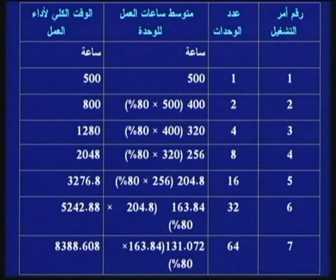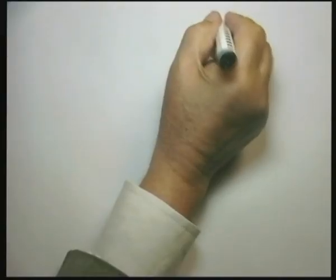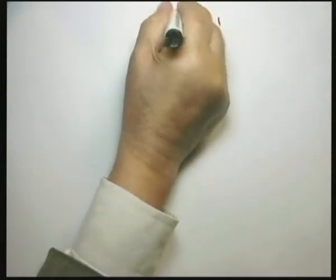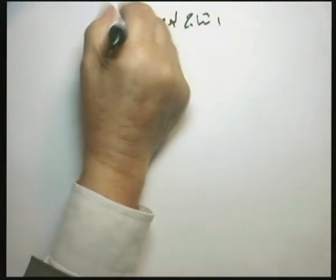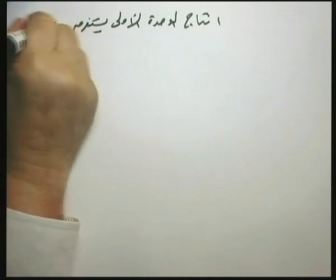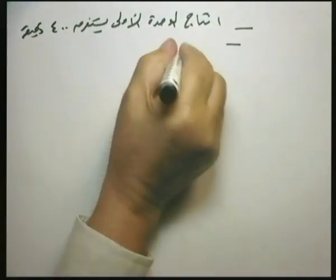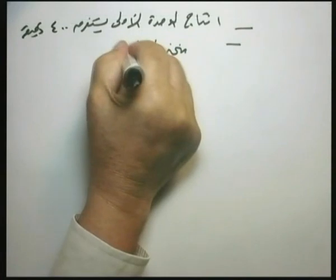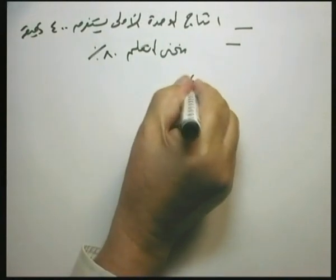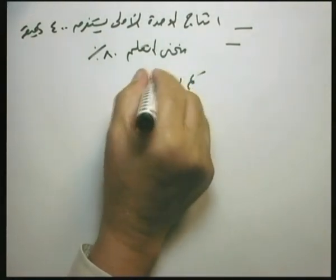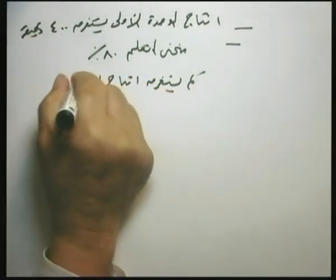نأخذ مثالاً مبسطاً في إطار موضوع منحنيات التعلم: إنتاج الوحدة الأولى يستغرق 400 دقيقة، ومنحنى التعلم 80%. المطلوب: كم يستغرق إنتاج الوحدة الثانية؟